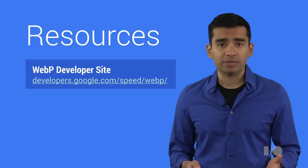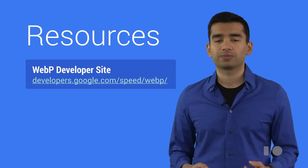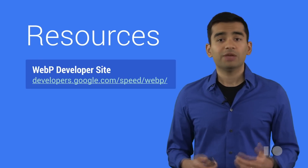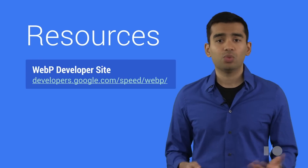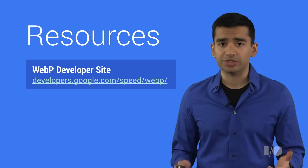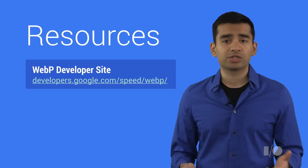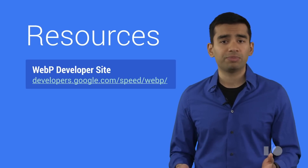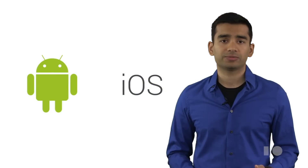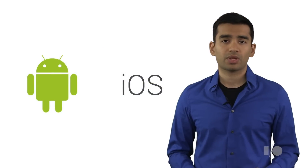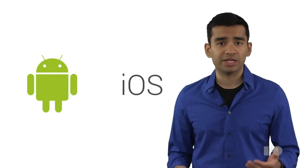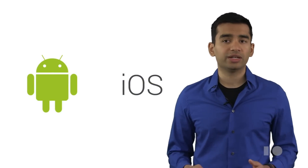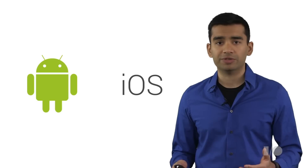So check with your provider, because they may already be able to do much of the heavy lifting for you. If you don't use a CDN, consider the paid speed service, which amongst many other optimizations will automatically transcode and serve WebP images to compatible browsers. If you're the developer of a mobile app that has significant image content, you too can take advantage of the benefits of WebP.